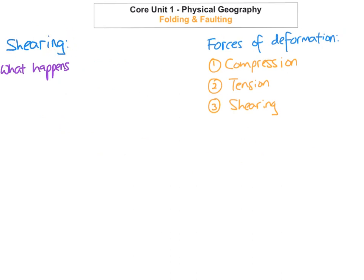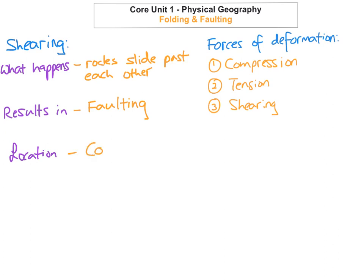The last one we're going to look at is shearing. What's happening here is when rocks slide past each other. This results in faulting. You find this at conservative plate boundaries. Conservative plate boundaries are also known as transform, passive, and neutral plate boundaries.